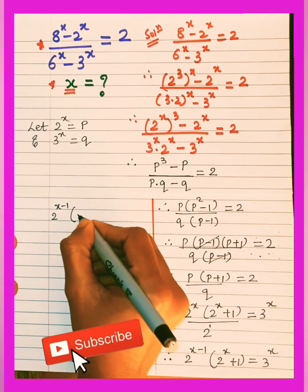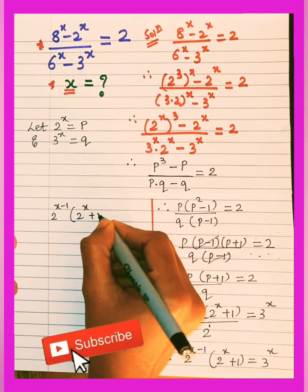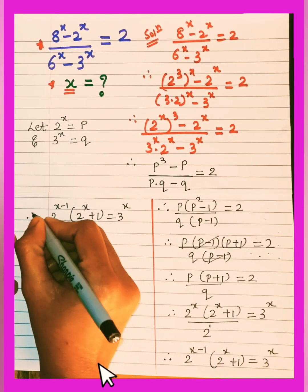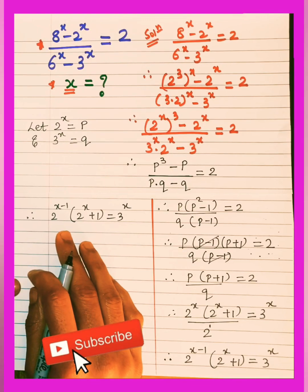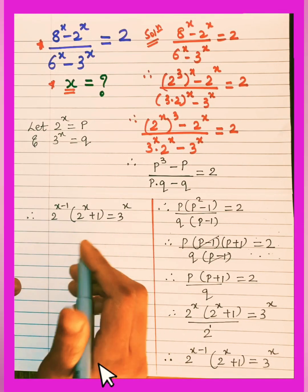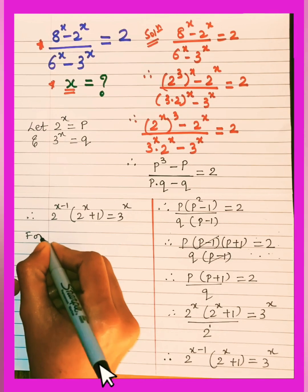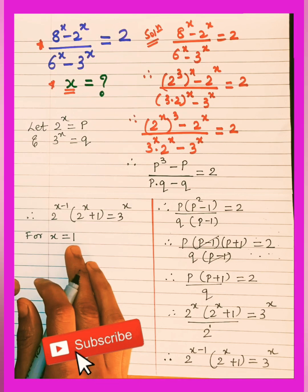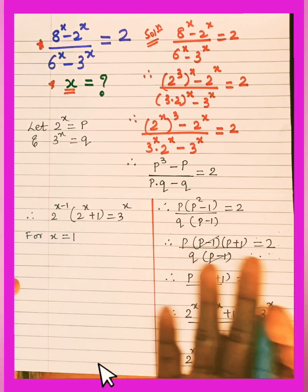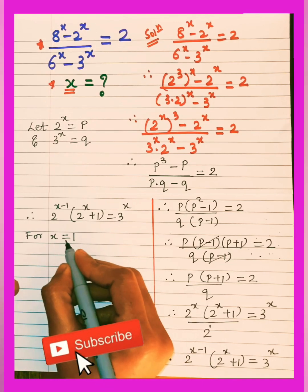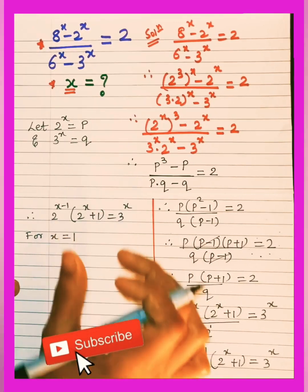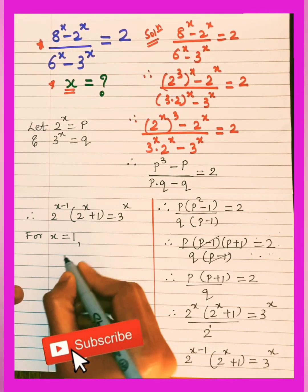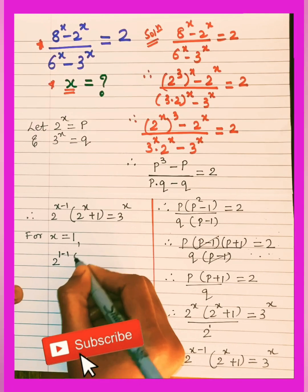So our equation is 2^(x−1) × (2^x + 1) = 3^x. To find the value of x we will use the trial and error method. We can try values x = 0, 1, 2, 3. For x = 1, we get a solution.